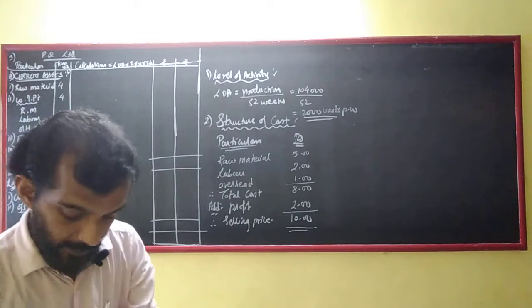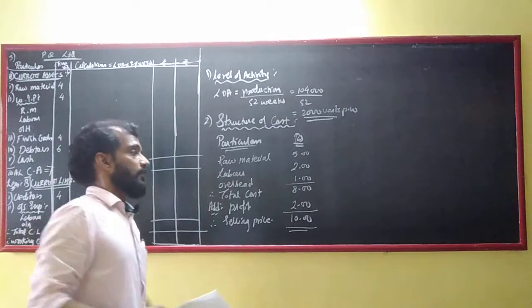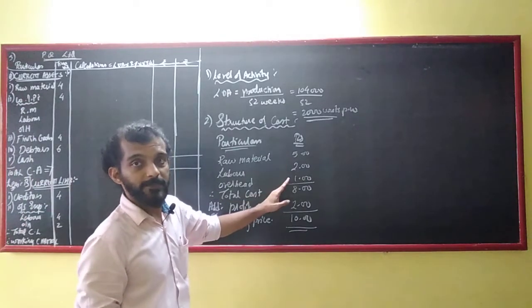Overhead is 50% of labour, so 2 rupees x 50% equals 1 rupee. My total cost is 8 rupees.